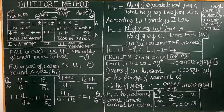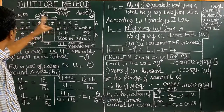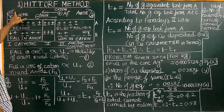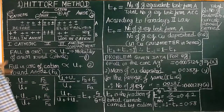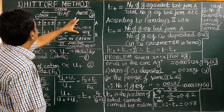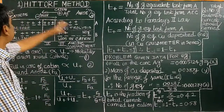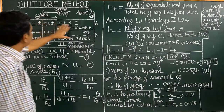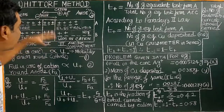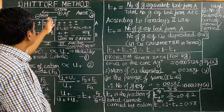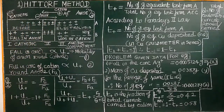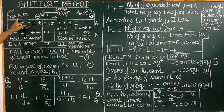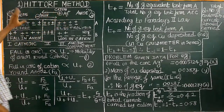Before electrolysis, the Hittorf cell contains two electrodes — cathode and anode. The positively charged electrode is called the anode, and the negatively charged electrode is called the cathode. Silver nitrate solution is taken in all three compartments before electrolysis. During electrolysis, cations migrate from the anodic compartment towards the cathode due to electrostatic attraction.